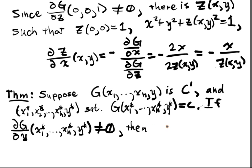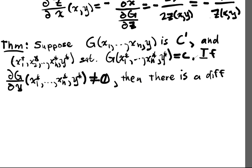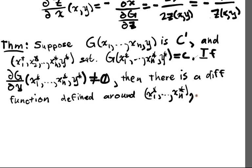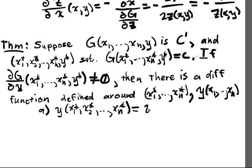then there is a differentiable function defined around x1 star, so this point up to xn star. And we'll call that function y of x1 up to xn. So for any x1 up to xn around x1 up to xn star, this thing is defined. And it satisfies a. The first thing it satisfies is that y of x1 star, x2 star, up to xn star, is equal to y star. So it agrees with that point. So if I compute it, I get that point back.